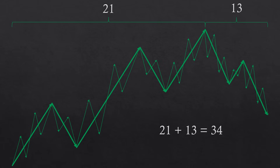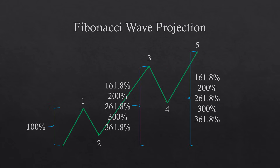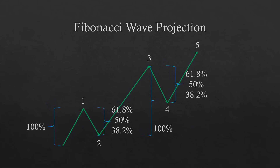As a general guideline when projecting future waves, the most powerful Fibonacci ratios should be used: 161.8%, 200%, 261.8%, 300%, and 361.8%. For example, wave three should fall near any one of these ratios when measured against wave one. The same is true for wave five in comparison to waves one or three. For corrective waves, look mainly for the 61.8%, 50%, and 38.2% ratios. Wave two should be either 61.8%, 50%, or 38.2% of wave one, and the same is true for wave four in relation to wave three.